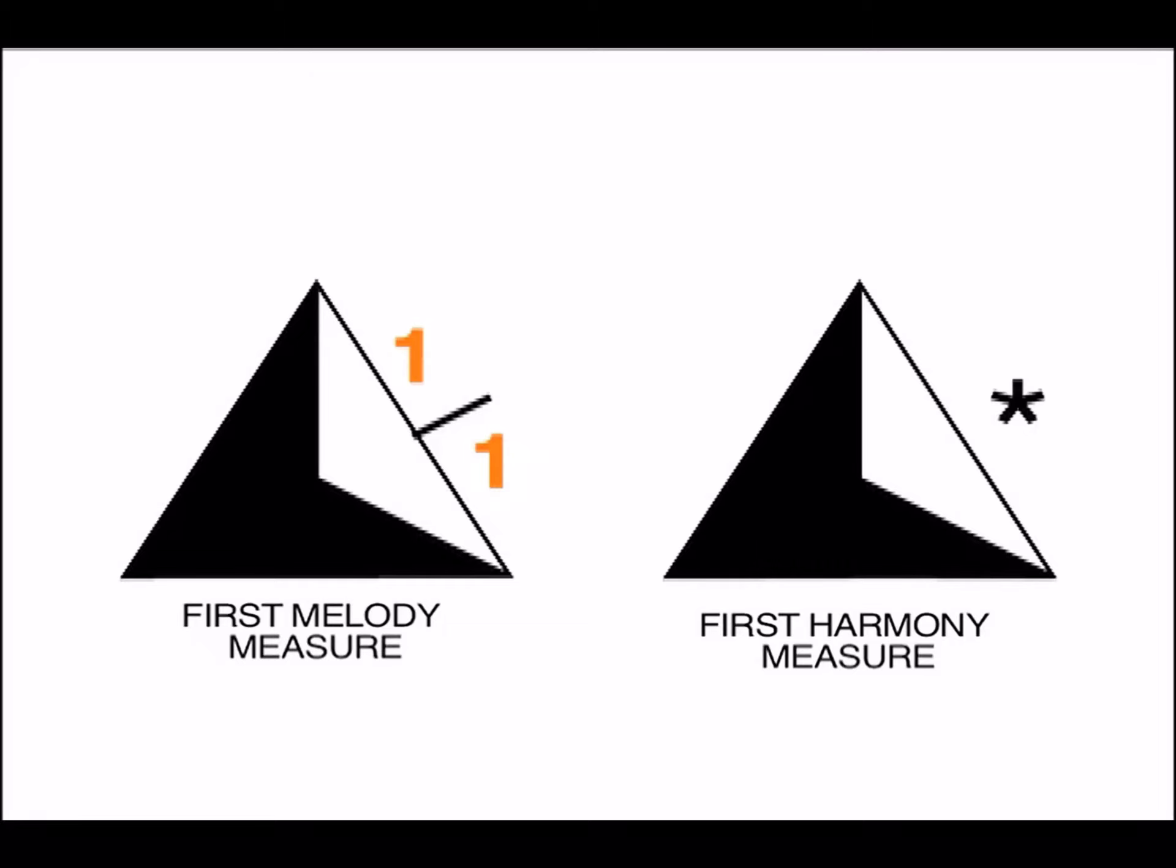In some songs, like Oh My Darling Clementine, the melody begins on the third beat of the first measure. And the harmony begins on the first beat of the second measure. You can listen to the CD to better understand this example.